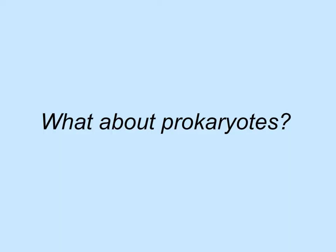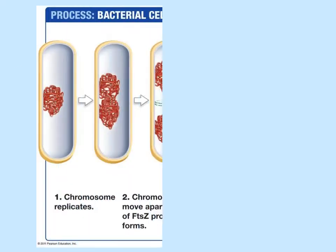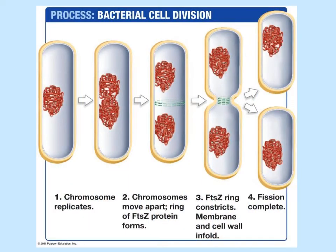We have not discussed cell division for prokaryotes. Bacteria have circular chromosomes and do not have a membrane-bound nucleus, but do have a region where the chromosome is found called the nucleoid. Bacteria divide by binary fission — the circular chromosome replicates and moves towards either pole of the cell, then a ring of protein called FtsZ contracts to split the cell in two.